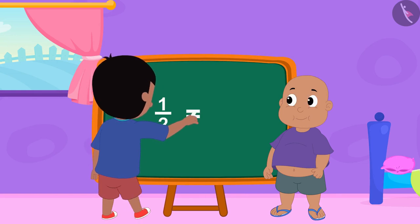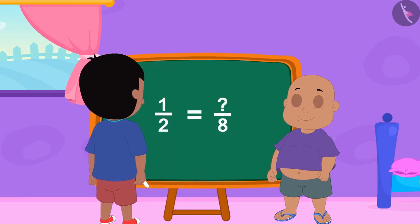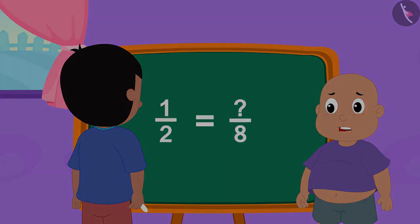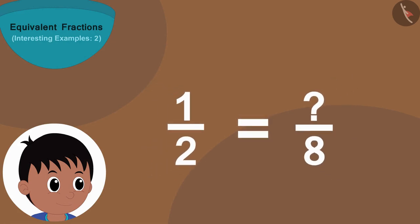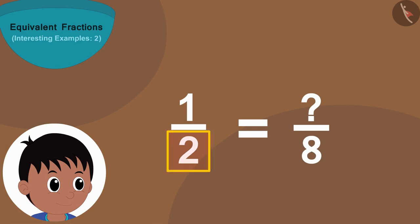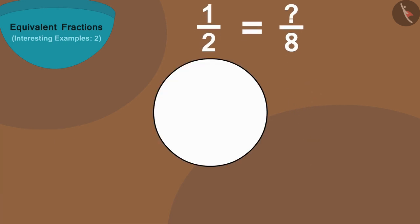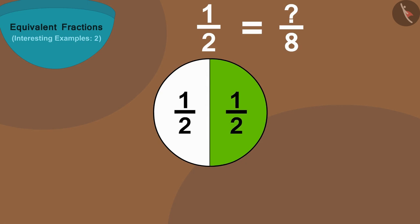Raju first wrote this fraction. Bablu started finding the fraction — children, can you help Bablu? Here the number two shows how many parts of a thing are created, and the number one shows that we took one of those two parts. Like if we divide this circle into two equal parts and fill color in one part, then we can write the colored part of the circle in the form of a fraction.